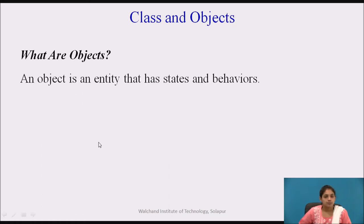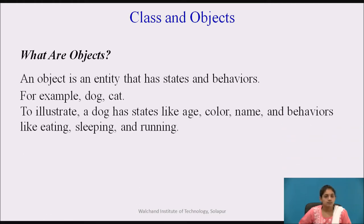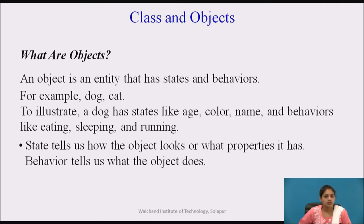What are objects? An object is an entity that has state and behavior. For example, take a dog. A dog has state like age, color, and name, and behaviors are sleeping, eating, and running. Age, color, and name are the states of the dog, whereas the behavior tells you what it does — eating, sleeping, or running. State tells you how the object looks, or the appearance of the dog: what is the age, what is the color, what is the name. Behavior tells you what the dog does and how it behaves.